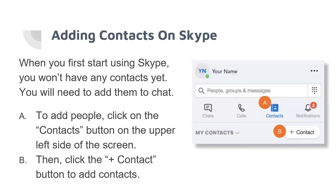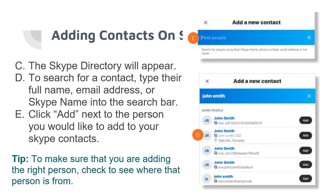Once you have created your Skype account using your email address or phone number, you need to add people. To add people, click on the Contacts button on the upper left side of the screen. The Skype directory will appear. To search for a contact, type their full name, email address, or Skype name into the search bar.